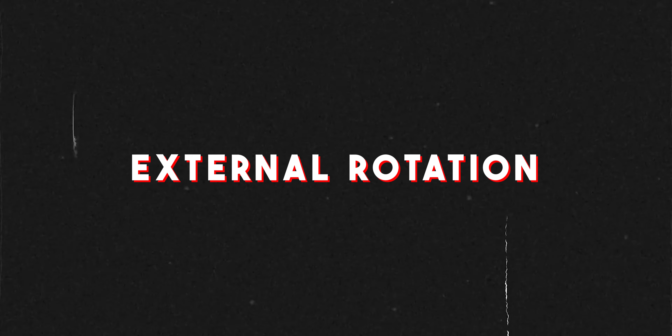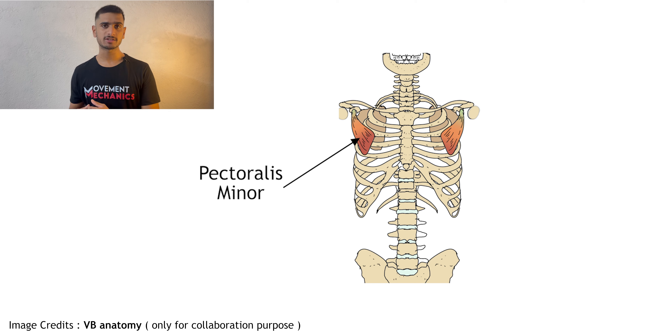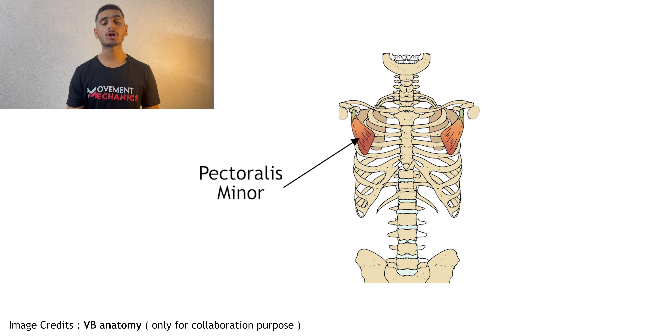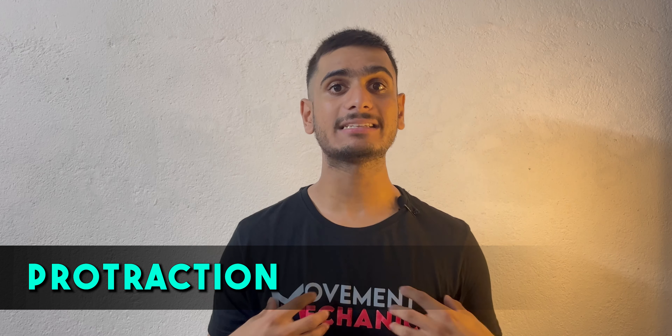The eccentric muscle actions of the pec major would be the opposite: shoulder extension, horizontal abduction, and external rotation. Moving forward to the pec minor — the pectoralis minor is a very small muscle beneath your pectoralis major. It originates from ribs three to five and inserts at the coracoid process of the scapula. The pectoralis minor protracts your scapula, meaning it brings your shoulder forward, and that forward position is called protraction.